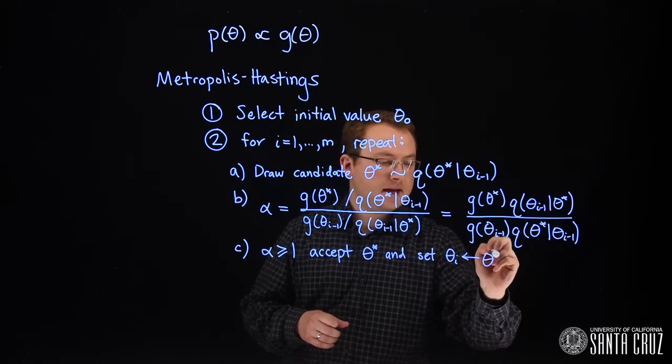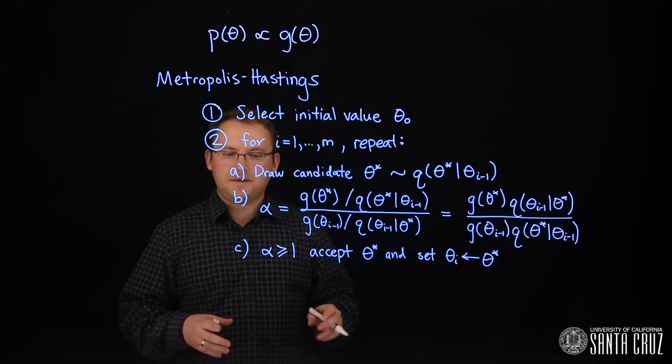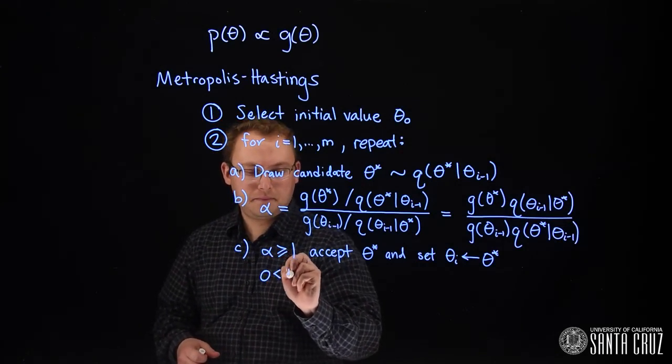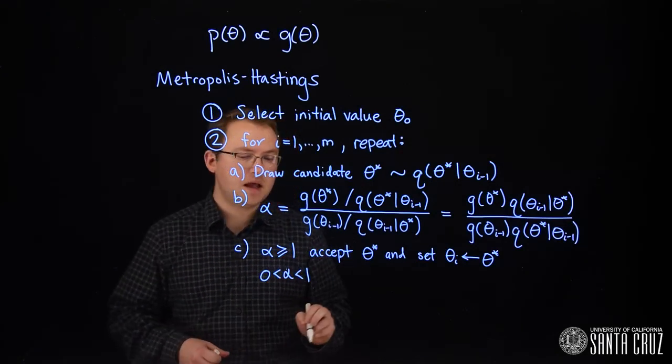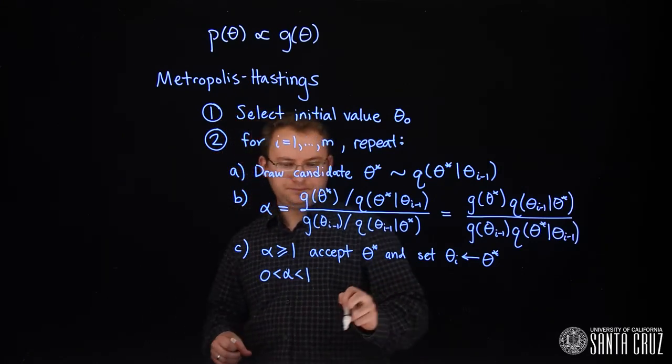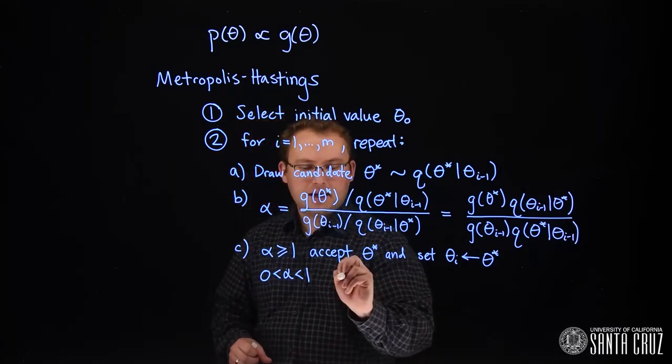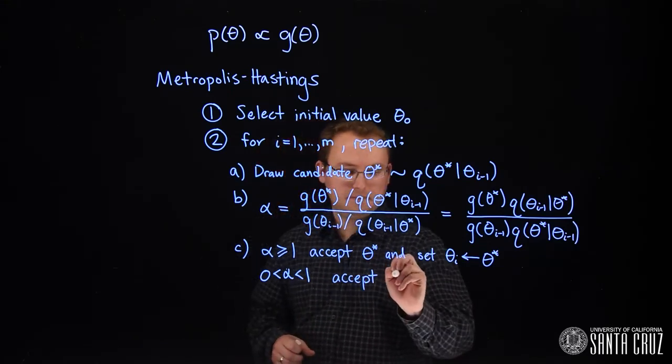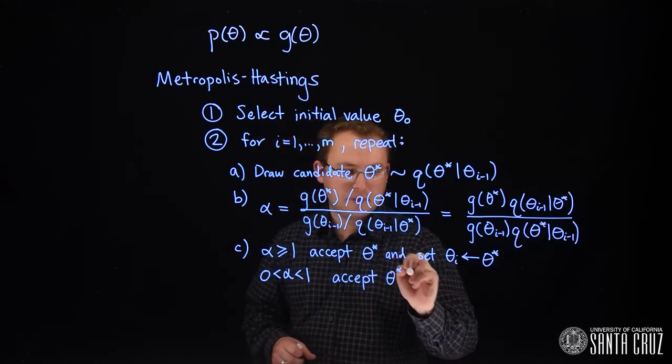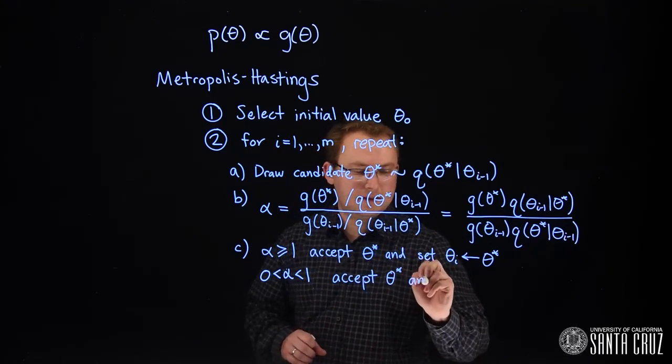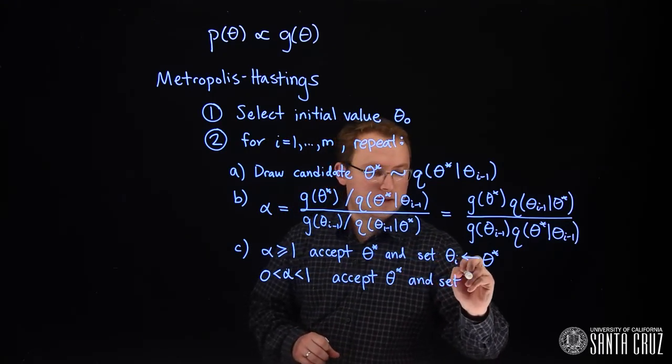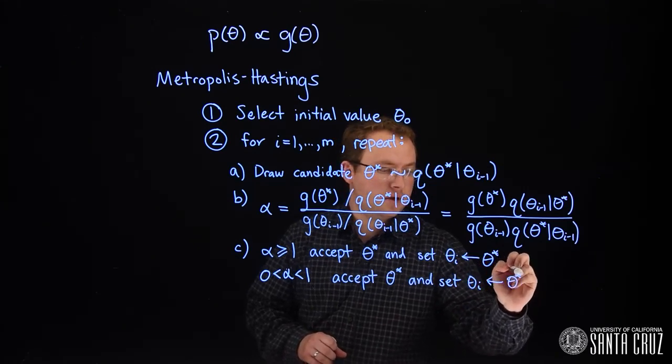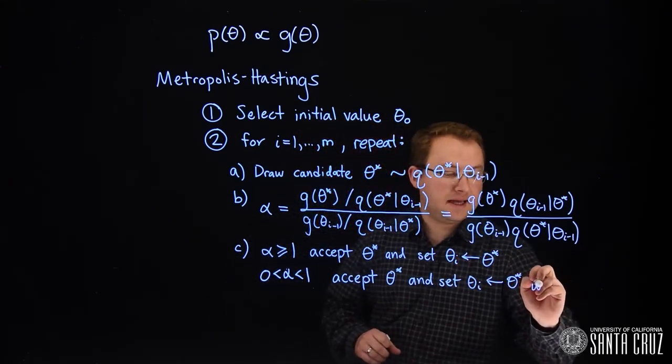If alpha is between 0 and 1, then what we're going to do is accept the candidate and set theta i equal to the candidate with probability alpha.